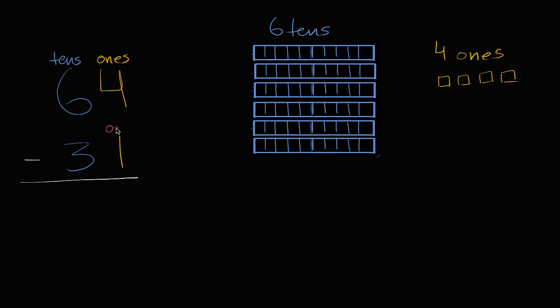31 is three tens and one one. So let's first take away the one one. We're gonna take this away. We're subtracting three tens, and we're subtracting one one. So let's take away that one one, and then how many ones are we left with? Well, now we're left with three ones. So four ones minus one one is three ones.